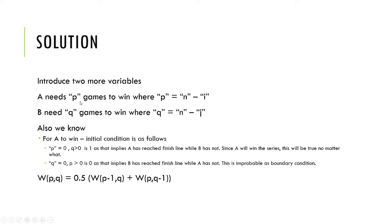What we first do is compute p and q, which is really how many games are needed for you to win the series. If n is the number of games you need to win, then A needs n minus i and B needs n minus j games to win. If you focus on p and q as the new variables, that makes the problem much easier to understand.